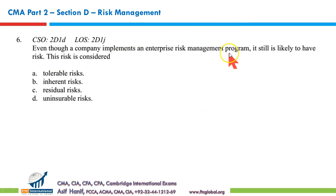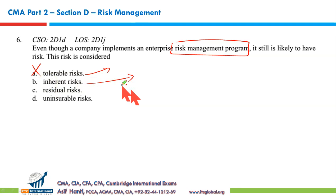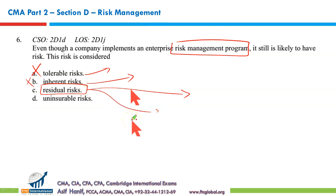Even though a company implements an enterprise risk management (ERM) program, it still is likely to have some risk. Tolerable risks are those an organization considers acceptable. Inherent risks involve a particular line of business, like uranium prospecting or investing in derivatives — but that's not the answer here. The risk that doesn't go away even after taking all possible actions — risk mitigation, transfer, sharing, and reduction — is called residual risk. That's the answer.